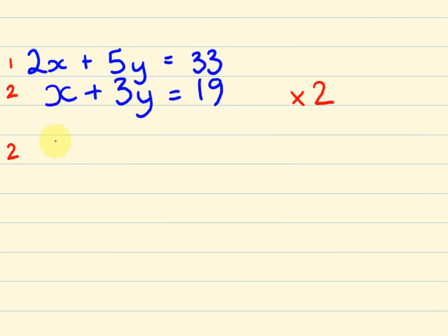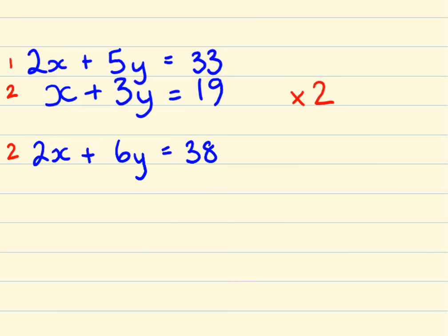So we're going to end up with this particular set of equations. x times 2 is 2x, plus 3y times 2 is 6y, and 19 times 2 is 38. Then what I'm going to do is this thing called elimination.